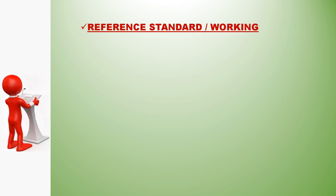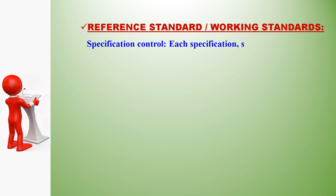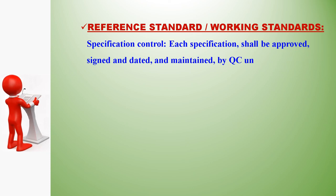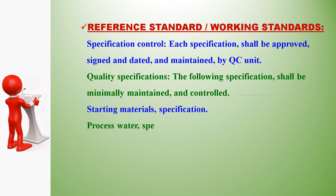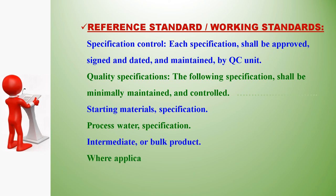Each specification shall be approved, signed, and dated, and maintained by the QC unit. The following specifications shall be minimally maintained and controlled: starting materials specification, process water specification, intermediate or bulk product specification where applicable, and finished product specification.